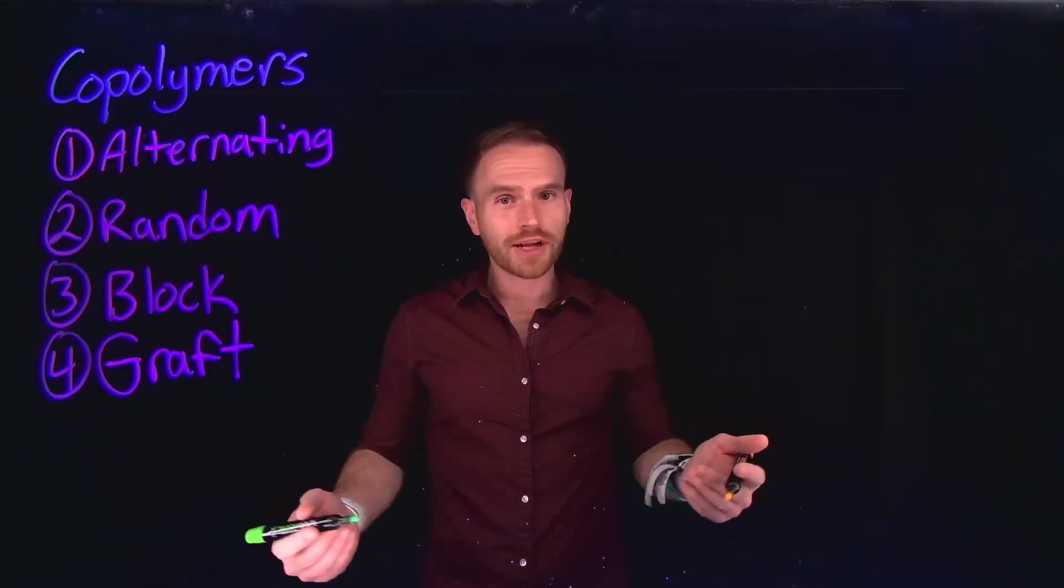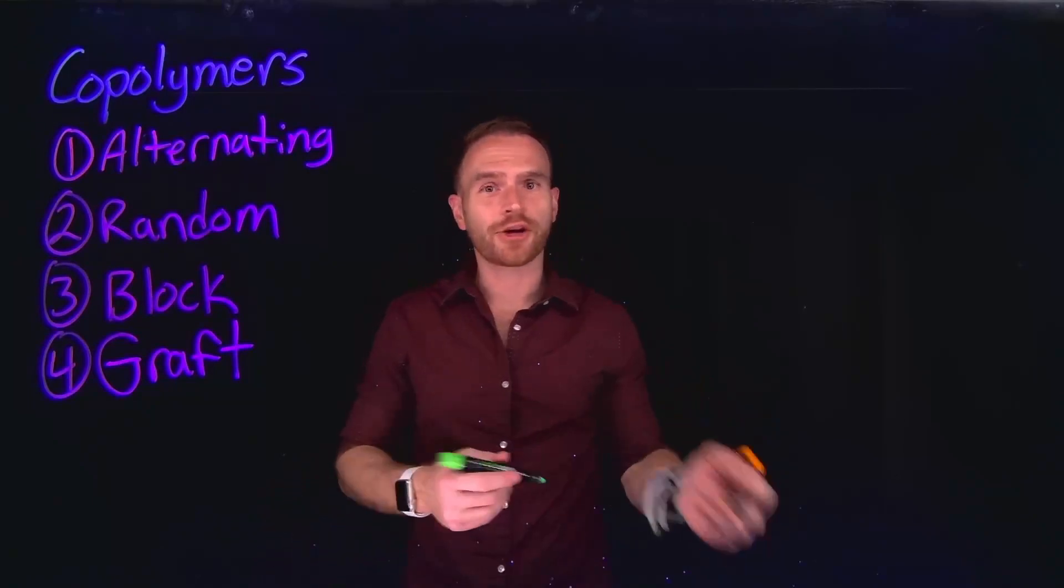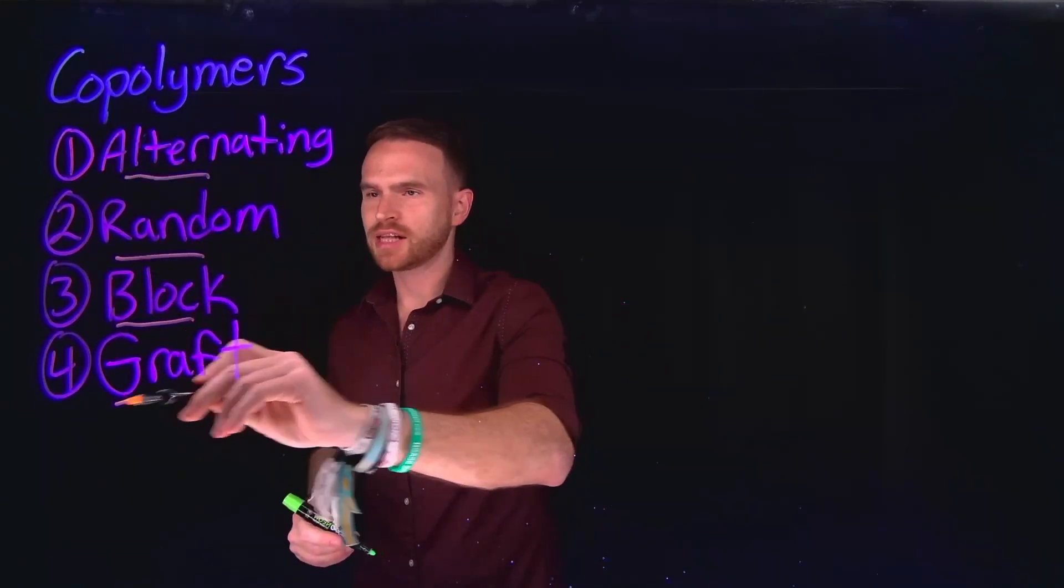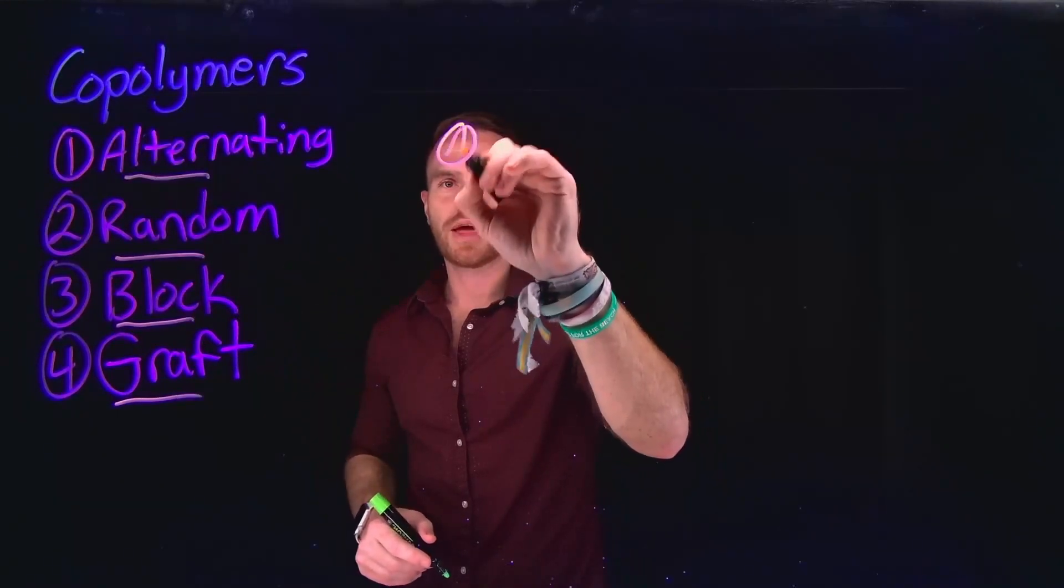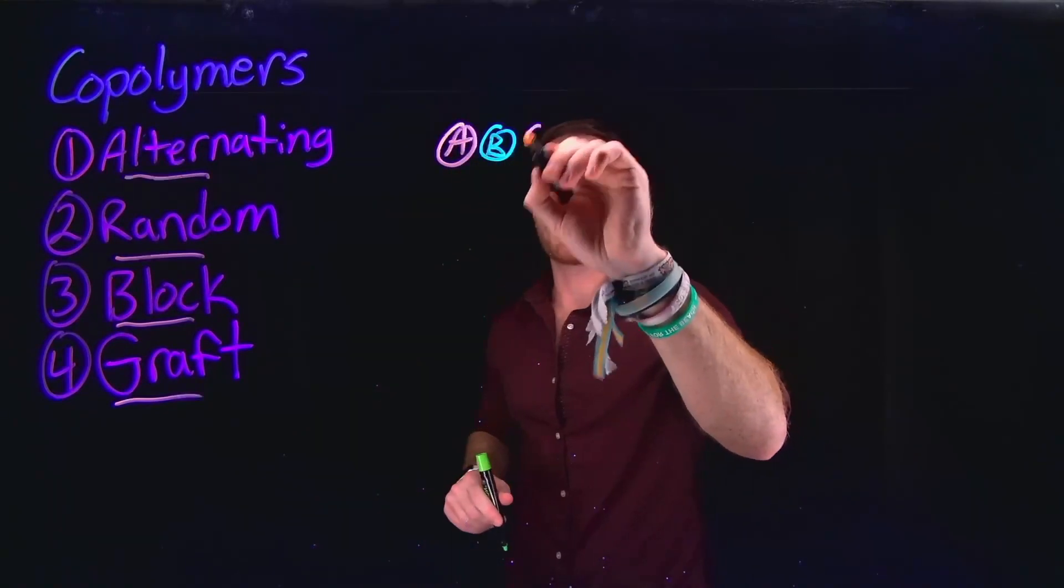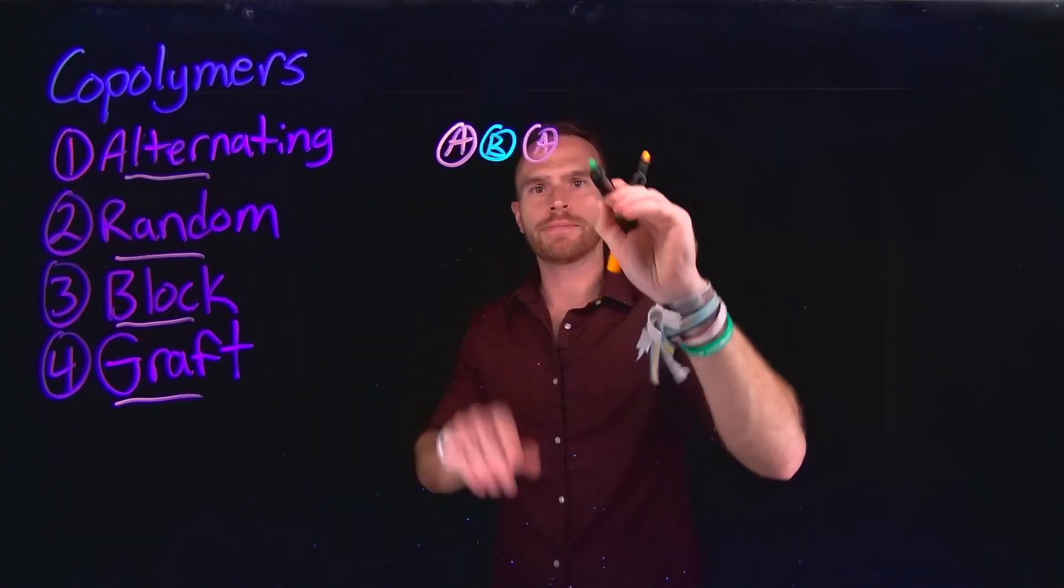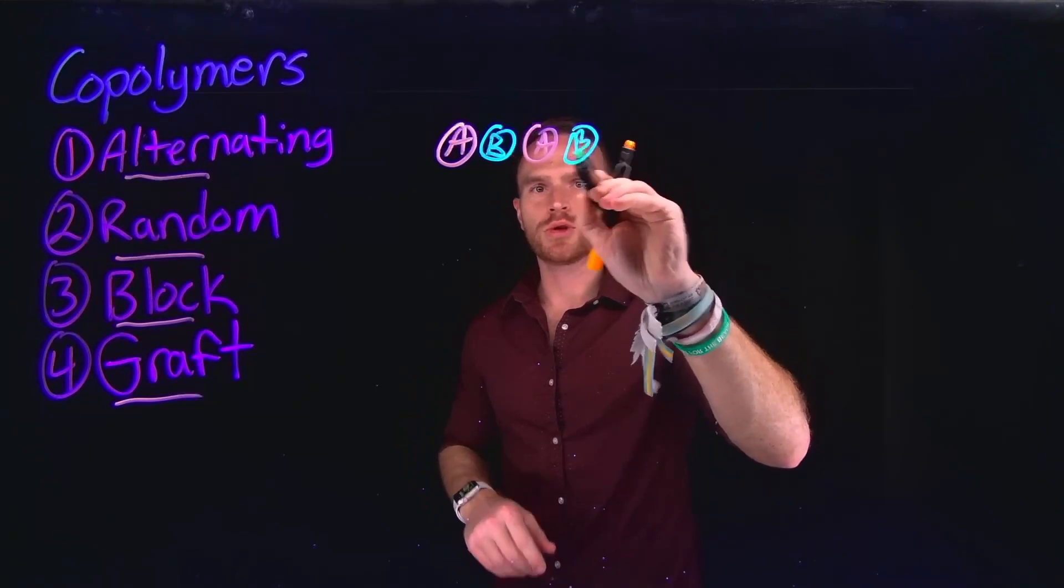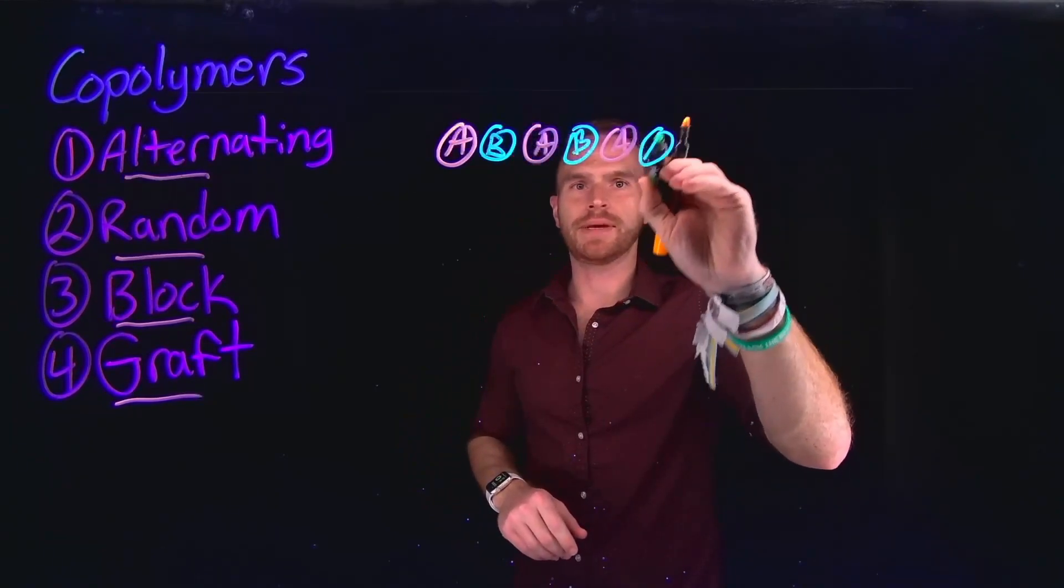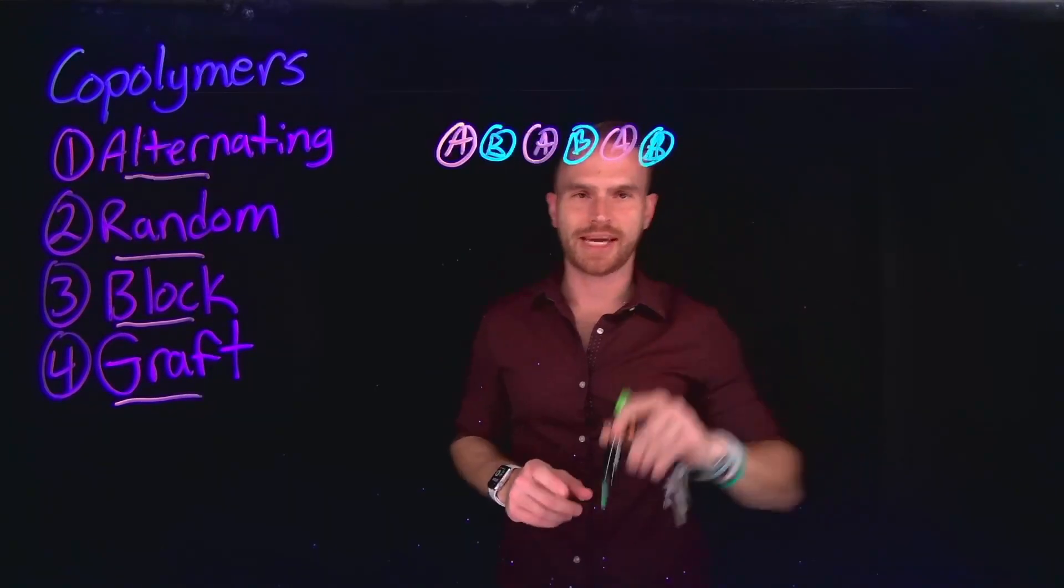Copolymers are often classified by the order in which they are connected to one another. There are four different types of examples that we'll learn about in this class. Alternating copolymers have what you might expect, which would be just alternating AB monomers that make up the polymer. So in this example, you just have several different repeating chains of those AB-AB orientations.